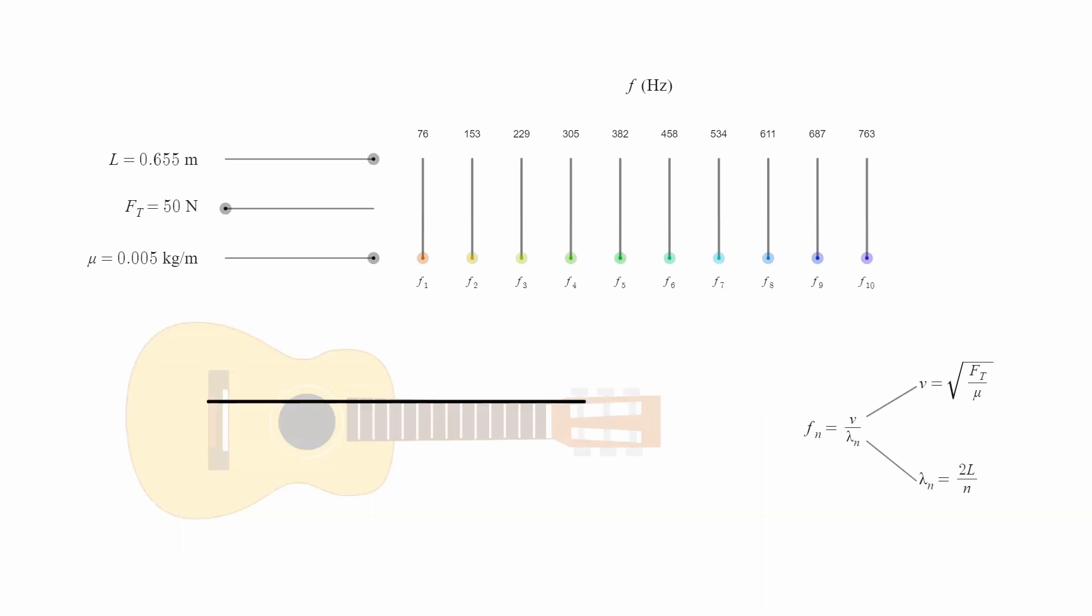The wavelengths of the other possible oscillation modes are calculated by replacing n by 2, 3, etc. The frequencies of these modes are therefore integer multiples, n, of the fundamental frequency. These are the harmonics.